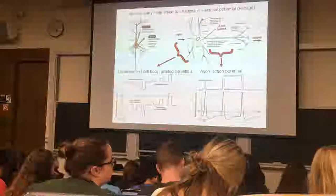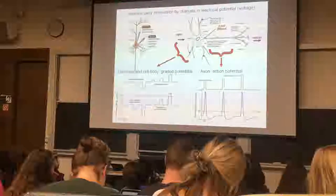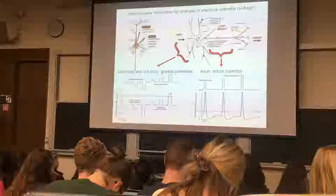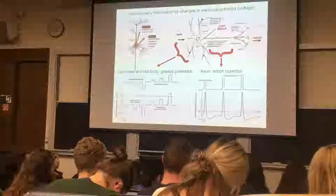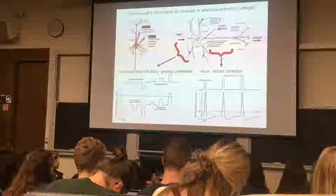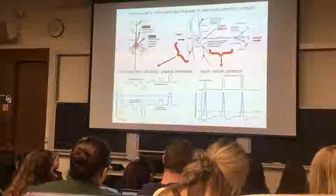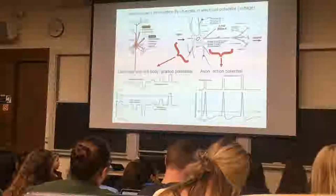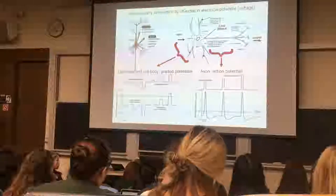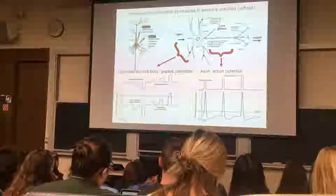The currency is largely based on the frequency of action potentials per unit time. In the sensory system, a higher number of action potentials per given time means a strong stimulus. A small number of action potentials over a given time period is due to a weak stimulus. The same is true in the motor system. A motor neuron firing at a high frequency causes a greater contraction of the muscle fibers it's connected to; firing at a low frequency gives rise to a weaker contraction. That's called rate coding.